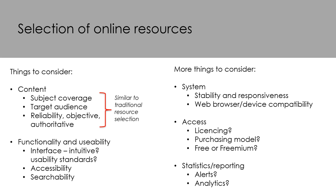Let's look at the processes of collection management for online collections. The selection of online resources is similar and yet different to traditional resource selection. Some considerations remain the same — for example, the content of the item: subject coverage, target audience, reliability, objectiveness, and the authoritative nature of the content. However, while these form the key criteria for selecting hard copy text, an online resource also includes functionality and usability. Is the interface intuitive for users? Does it meet usability standards for all users with all types of needs? Is it highly accessible and does it have searchability to enable users to navigate and locate what they need?